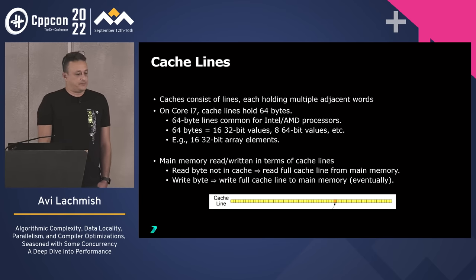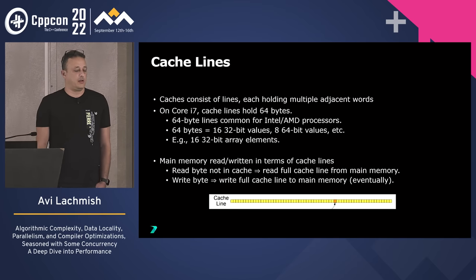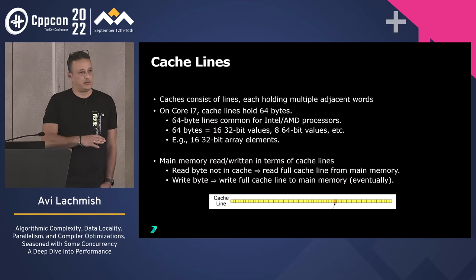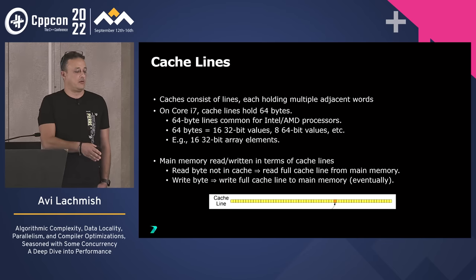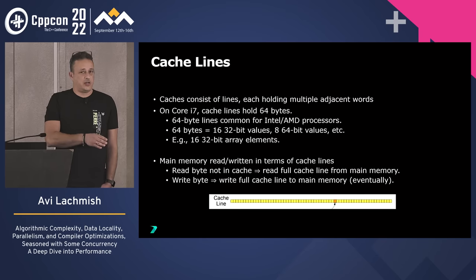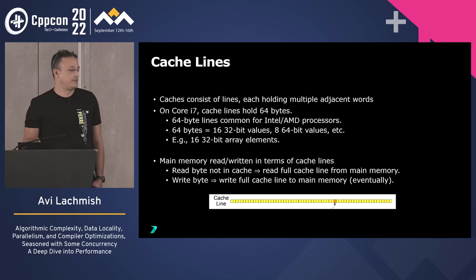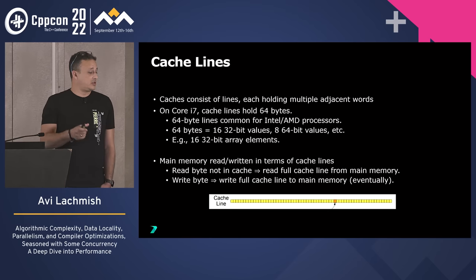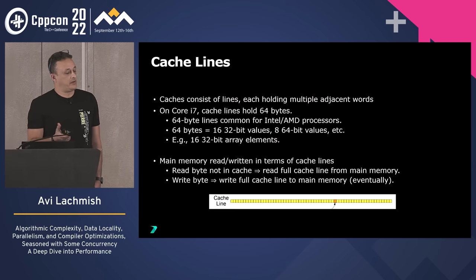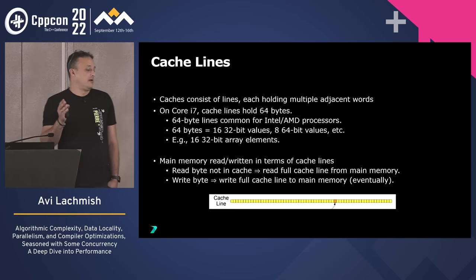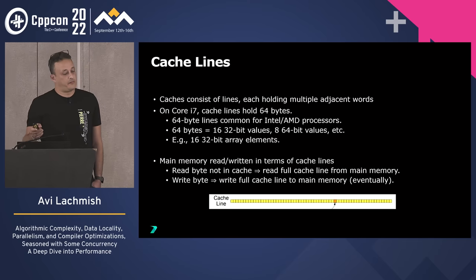Cache lines on my machine are 64 bytes. Cache lines are the currency that moves between your caches and main memory. The same 64-byte line size applies across L1, L2, L3, and main memory. To get a sense of the size: that's 16 values of 32-bit or 8 values of 64-bit, etc.